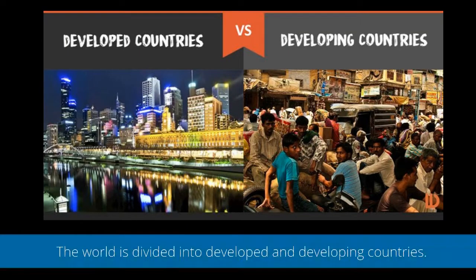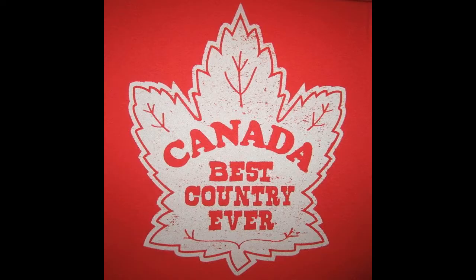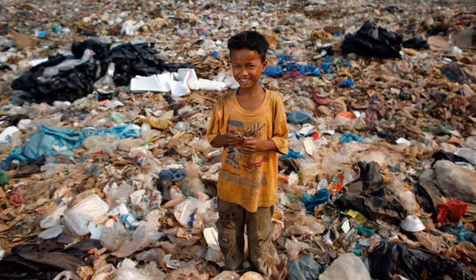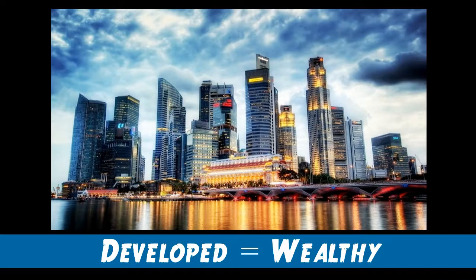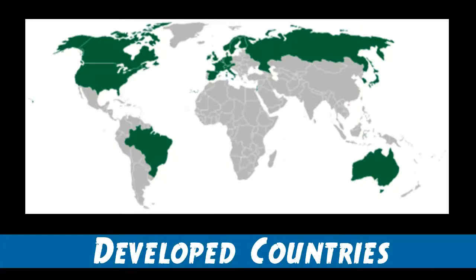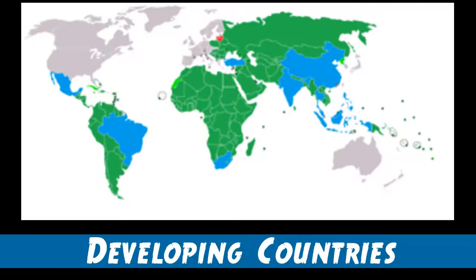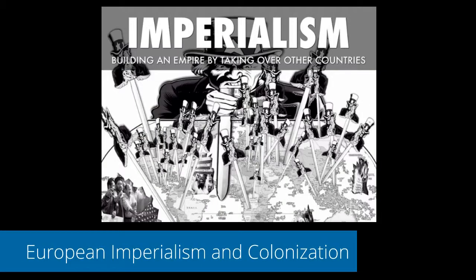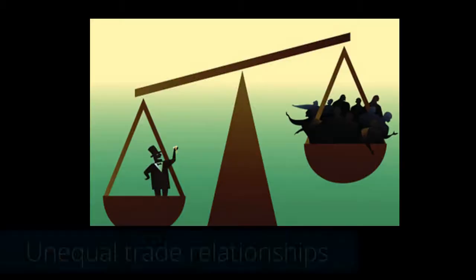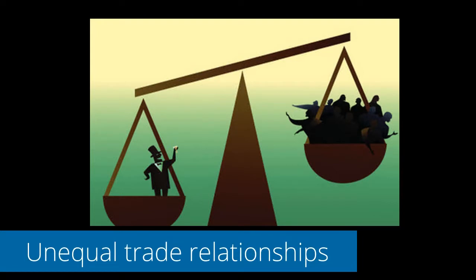Second, the world is divided into developed and developing countries. You are very lucky to live in Canada because Canada is a pretty wealthy country. There are two types of countries: developed countries, which are wealthy countries like Canada, United States, Australia, Japan, and most countries in Europe; and developing countries, which range from moderately wealthy countries like Brazil, Mexico, China, and India, to very poor countries like Bangladesh, Burkina Faso, Afghanistan, and Haiti. We'll examine why, looking at European imperialism, colonization, unequal trade relationships, and global sustainable development.